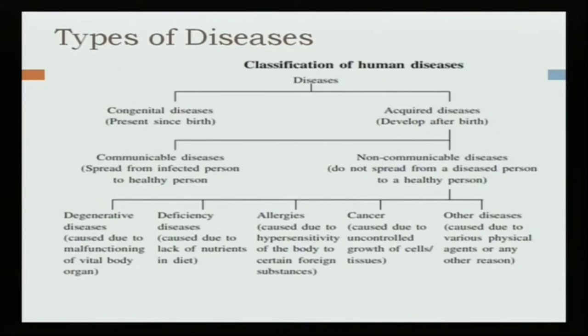Acquired disease develops after birth. If we talk about acquired disease, we can divide it in two ways: communicable disease and non-communicable disease. In communicable disease, there is a biological agent spread from an infected person to a healthy person. Communicable disease is like Corona — it is a communicable disease which has a whole society's impact. Symptoms like high fever and body pain are seen.